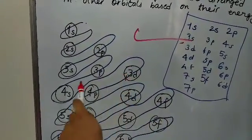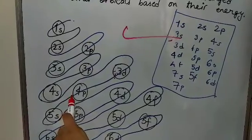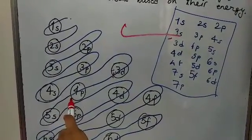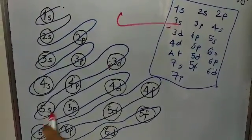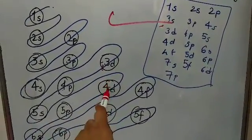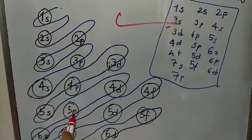right? From 3d, it goes to 4p. From 4p, it goes to 5s. From 5s to 4d, 4d to 5p.